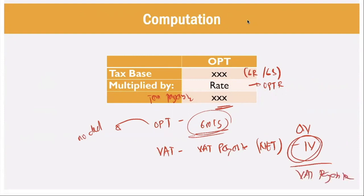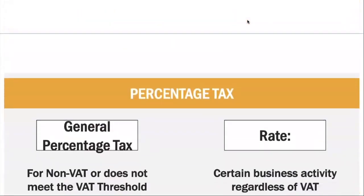Under OPT, you don't deduct anything, except in one case — winnings — which we will discuss later. Percentage tax is an enumeration under the tax code, provided under Section 116 to Section 127 of the NIRC. We now look at the types of percentage tax: general percentage tax for non-VAT or those not meeting the VAT threshold, and other percentage tax for certain business activities regardless of VAT threshold.